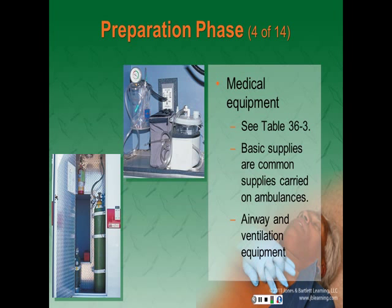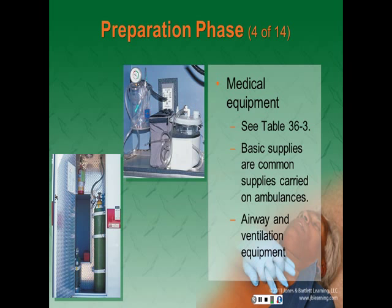The mounted oxygen unit should be equipped with visible flow meters capable of delivering 1 to 15 liters per minute, accessible at the head of the stretcher, with transparent disposable oxygen masks in sizes for adults, children, and infants. Ambulance services on runs longer than an hour should consider a disposable single-use humidifier.